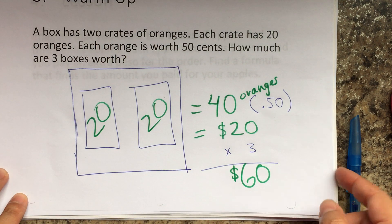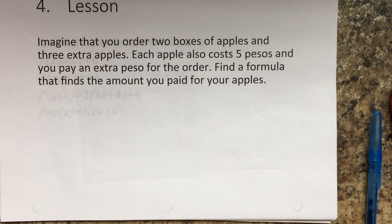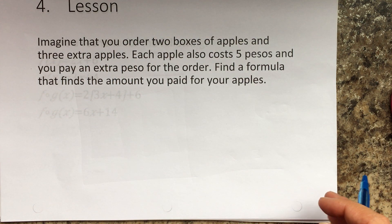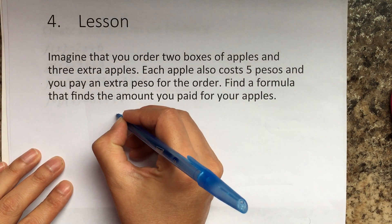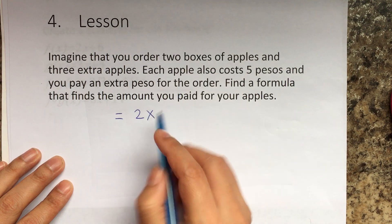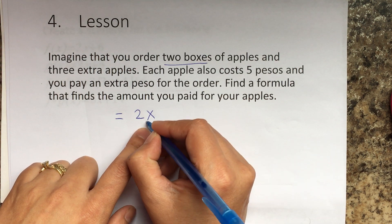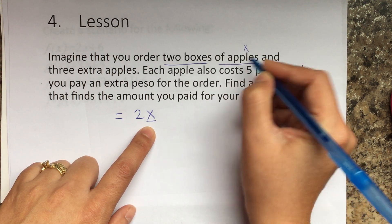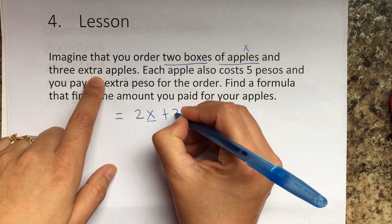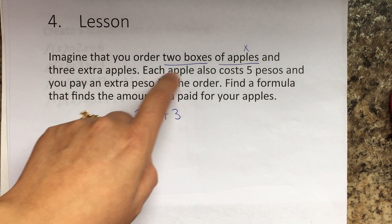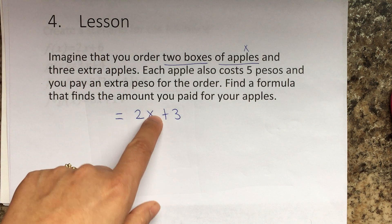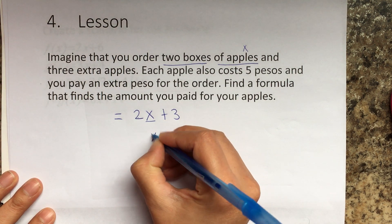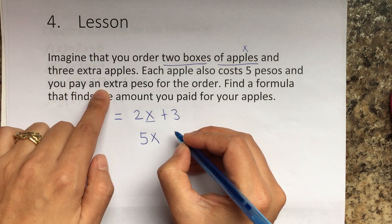The next one says: imagine you order two boxes of apples and three extra apples — how would you write that? It's going to be 2x plus 3, where the two represents the two boxes, x represents the number of apples per box, and three represents three extra loose apples. Each apple costs five pesos, and you pay an extra peso for the order.